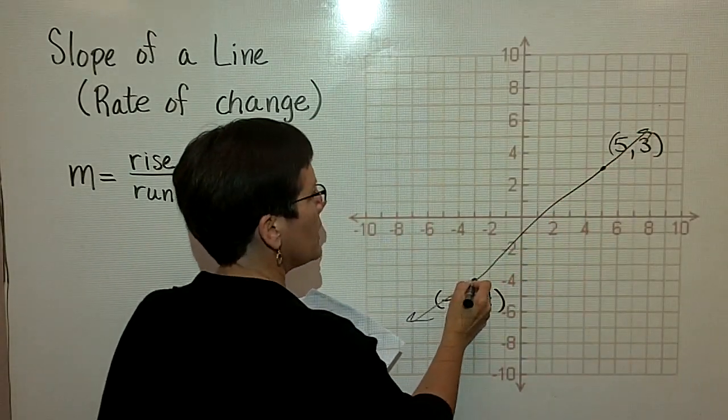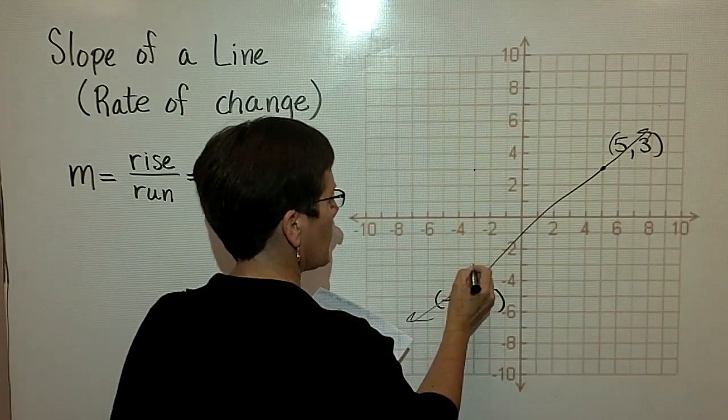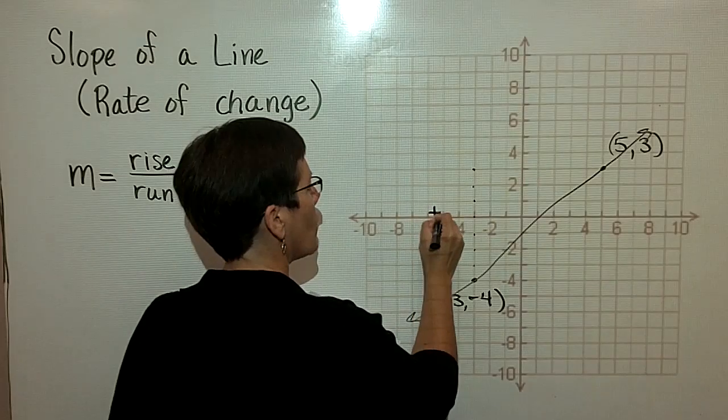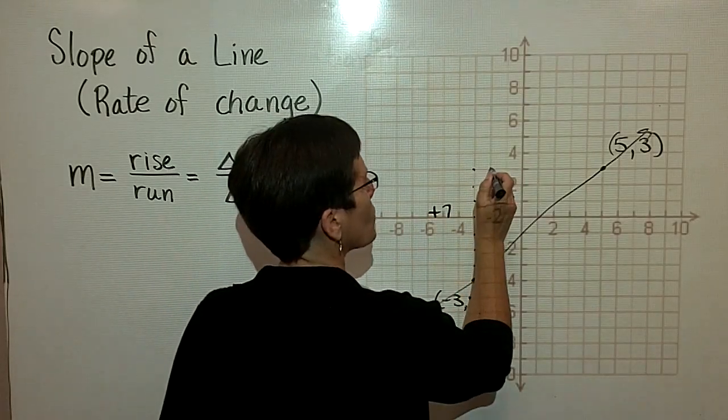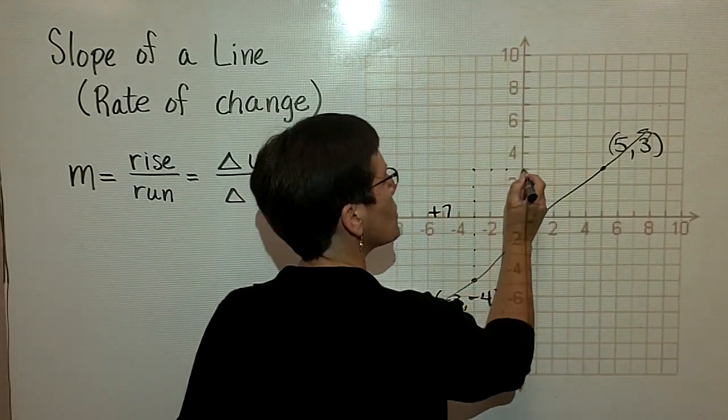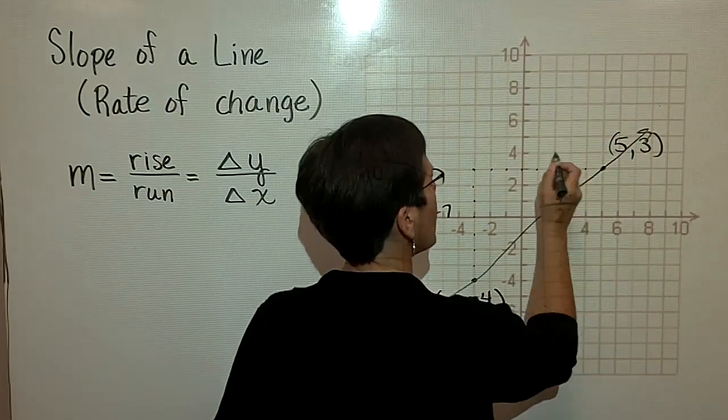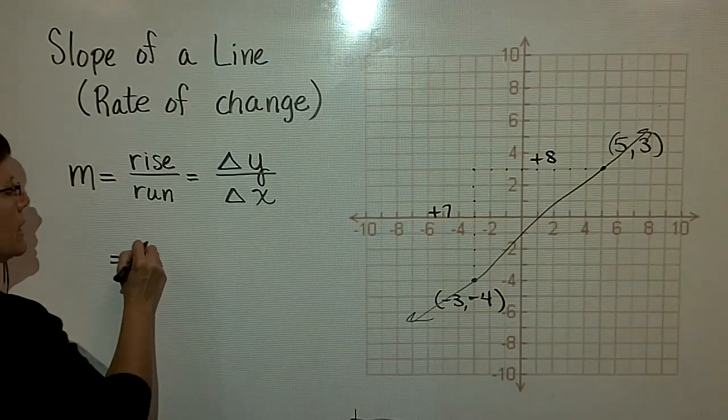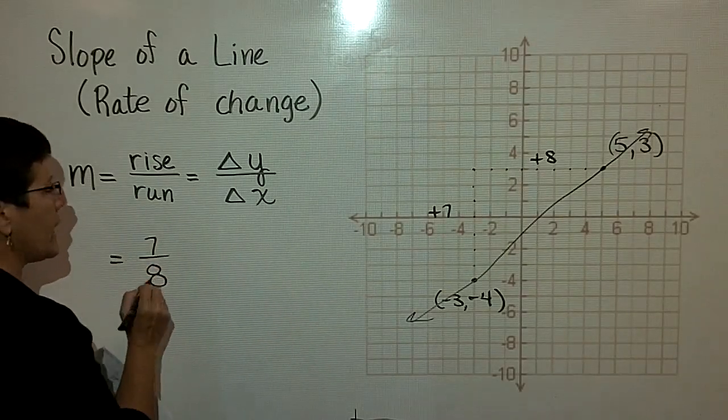And I know that from here I'm going to go up to this point. So up 1, 2, 3, 4, 5, 6, 7. So I'm going to go up 7. And then I'm going to go to the right, positive right, 1, 2, 3, 4, 5, 6, 7, 8. So I'm going to run 8 units. So it looks like the slope of this line is 7 over 8.